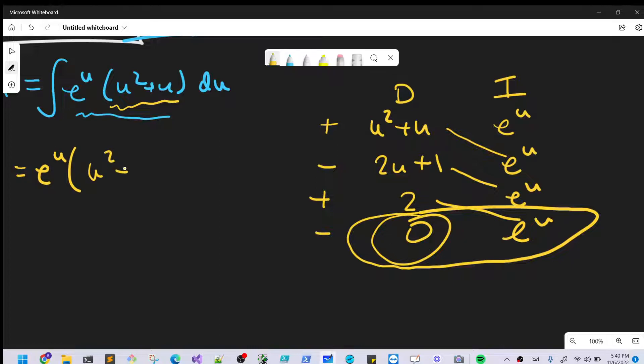So we'll have e to the u on the outside. And then we'll have u squared plus u. We're going to have a minus on this row. So minus 2u distributing in the minus sign. Minus 1 plus 2. And let's just rewrite that as we've got some terms that we can clean up here.